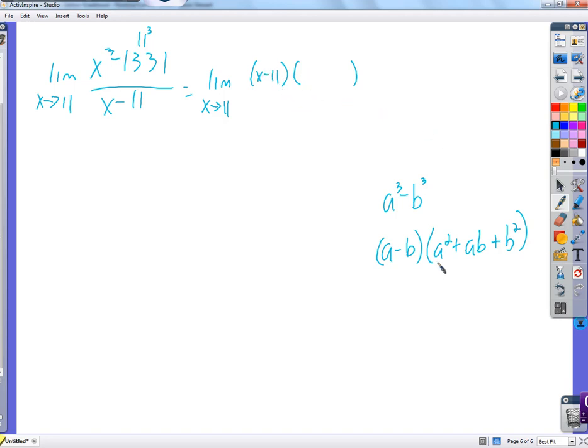And then a squared, x squared plus 11x plus 11 squared, which is 121. Now we have x minus 11 and x minus 11, we can cross those out. Now we just have the limit as x approaches 11 of this thing here.